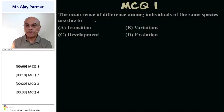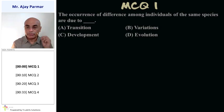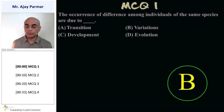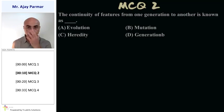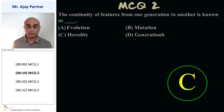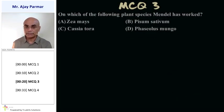The occurrence of difference among the individuals of the same species is known as variations. So option B is the correct answer. The continuity of features from one generation to another is called heredity. Option C is the correct answer.